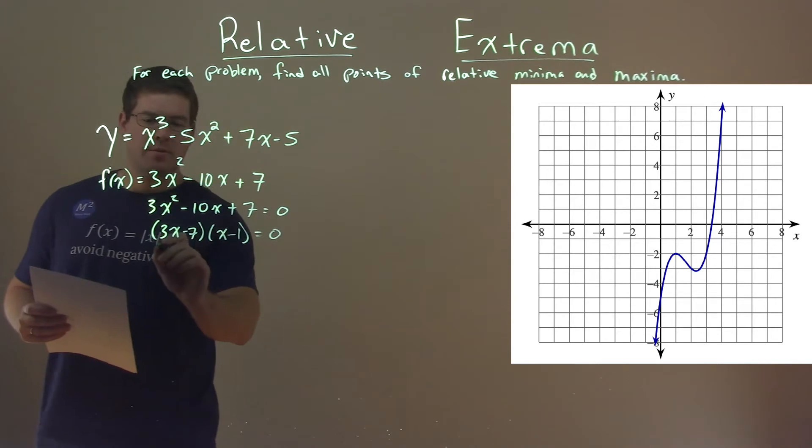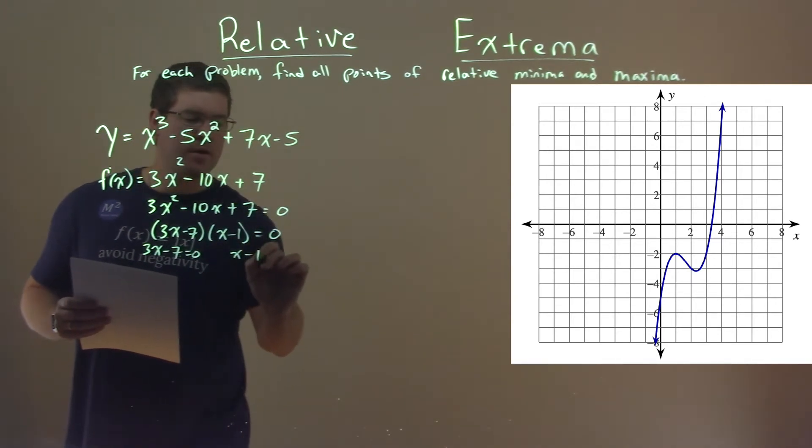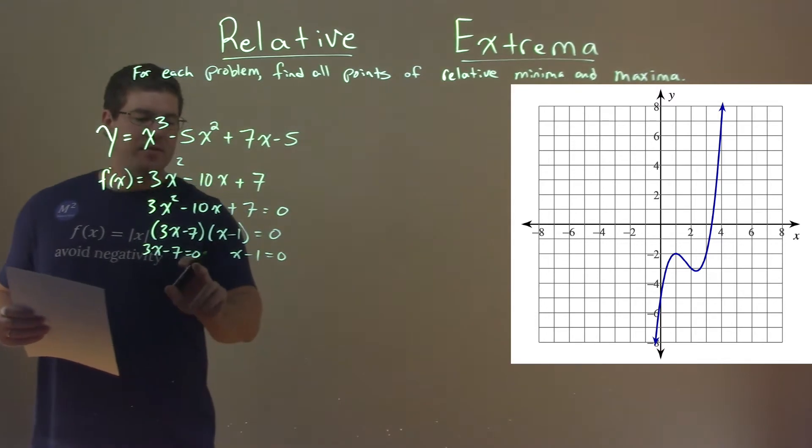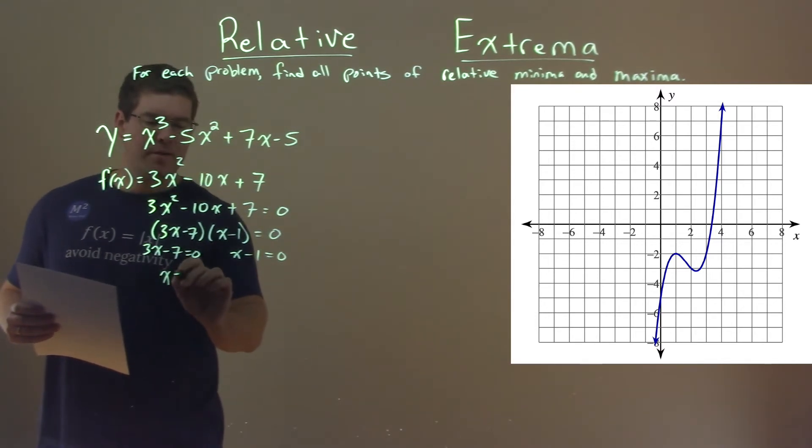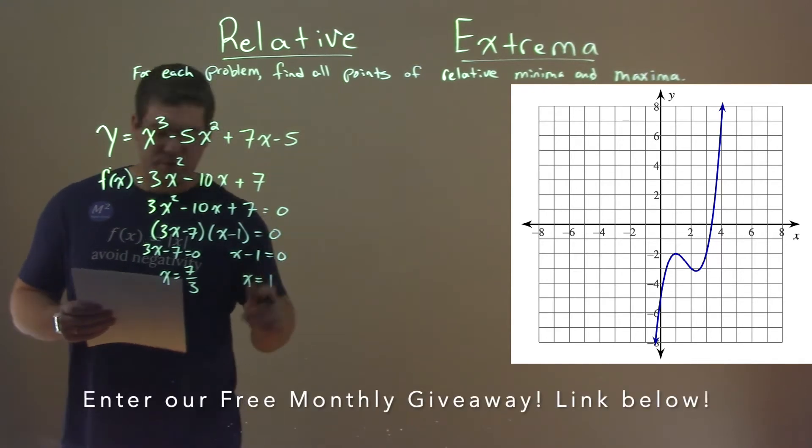From there, we can set each part equal to 0: 3x minus 7 equals 0, and x minus 1 equals 0. Add 7, divide by 3, x equals 7 thirds. Add 1 to both sides, x equals 1.